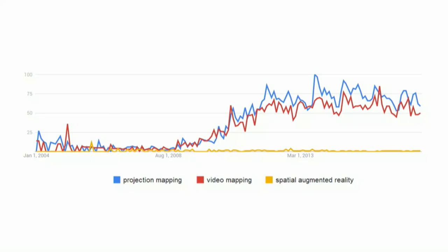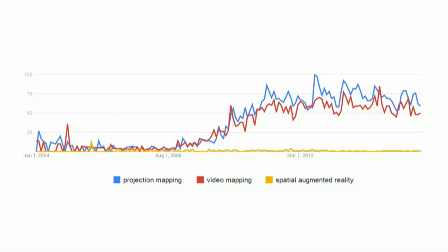This used to be called spatial augmented reality. Then about 2008, artists in the media decided it was projection mapping. The first known instance of this was at Disney's Haunted Mansion ride — that was in 1969, using analog video projectors.